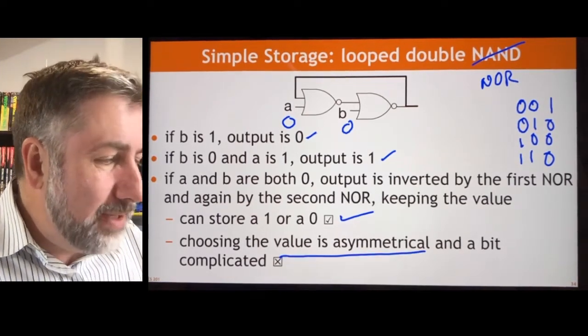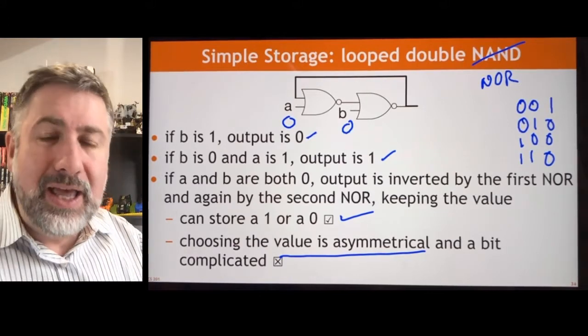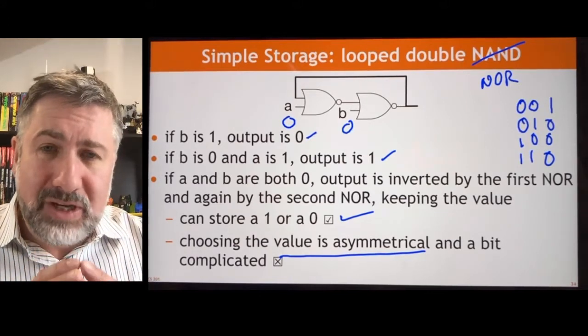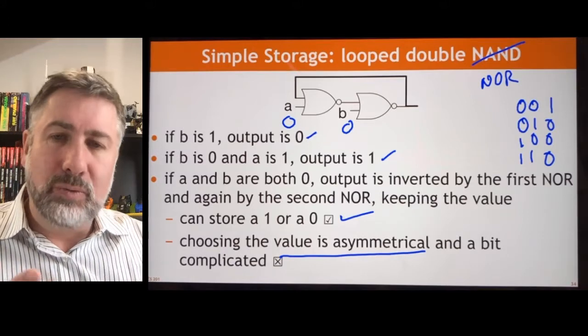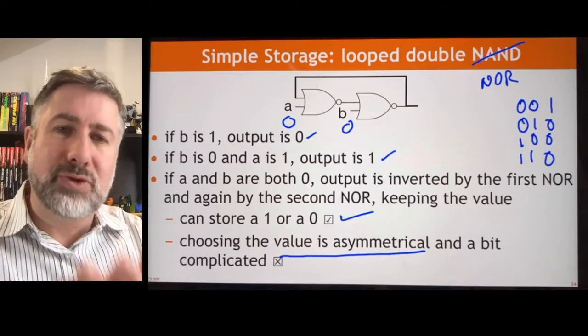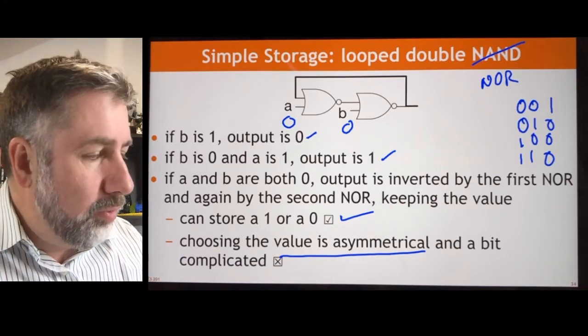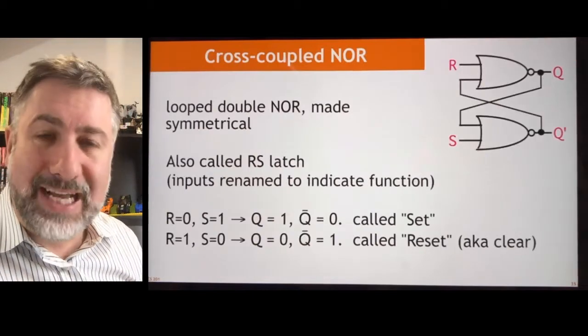So this works great. We can store a value, we can keep the value. It's a little bit asymmetric, a little bit complicated. It looks like we're almost there. Maybe we could build a symmetric device that works the same for storing a 0 as for storing a 1, and we would be all the way there. And in fact, that's what we get.